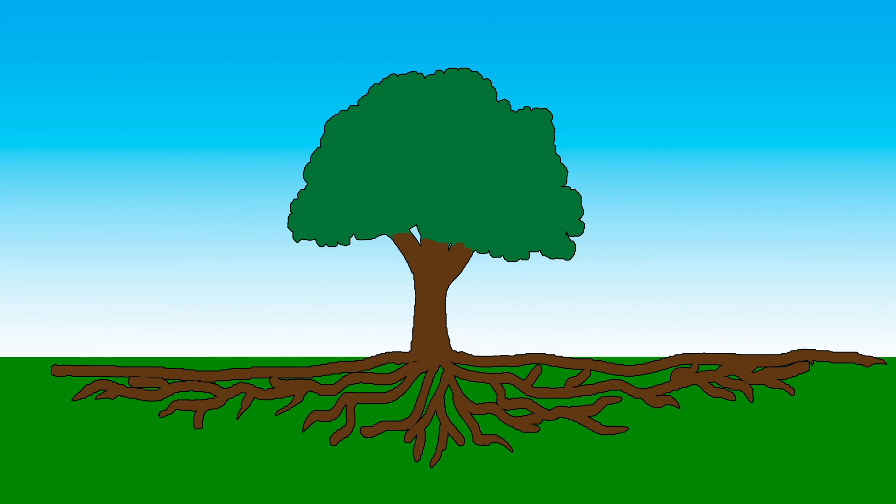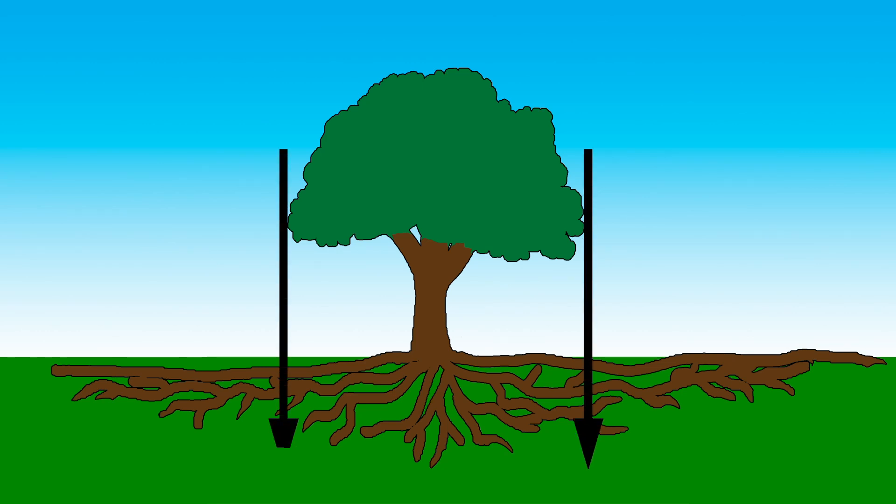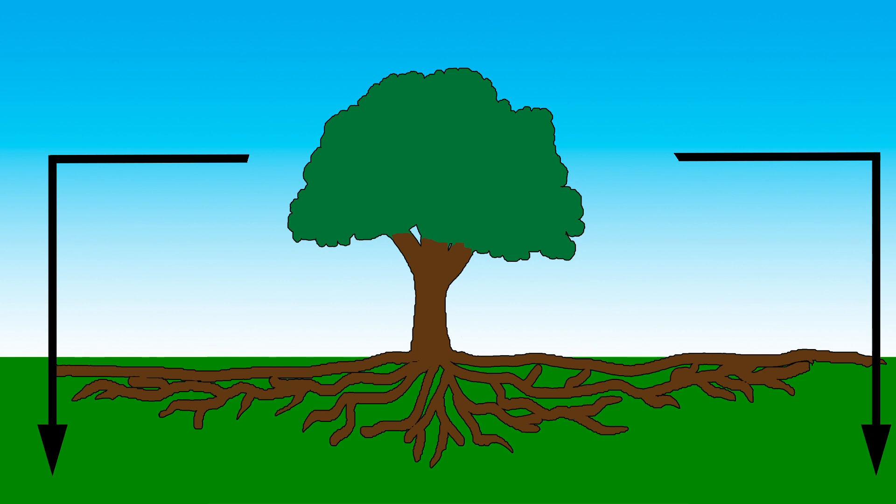The root system as a whole is relatively shallow and extensive. Typically, most of your roots are going to be within three feet of the soil level, with most of your absorbing roots being much more shallow than that, typically between one half and one foot in depth. In terms of the extent of the root system, it can be quite variable depending on the species and the growing environment, but a good rule of thumb is that the root system will spread out as wide as the drip line of the tree and maybe up to twice that distance.